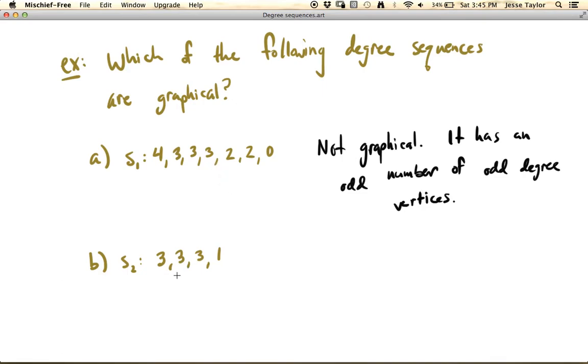Well here we do have an even number of odd degree vertices. All four of these have odd degree. So you might think for a second about whether you might try pausing the video and constructing a graph that fits this. I'll go ahead and tell you that this is graphical. There is such a graph for which this is the degree sequence. So you might try pausing the video and trying to draw one.